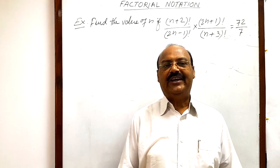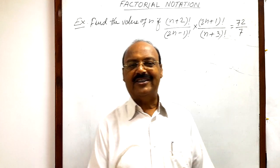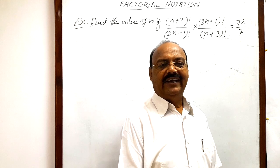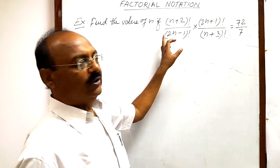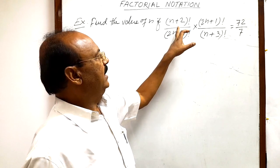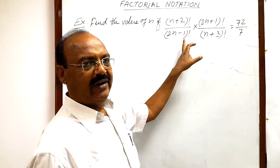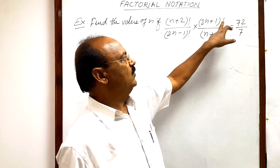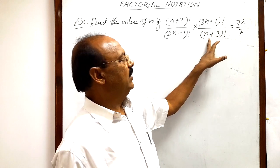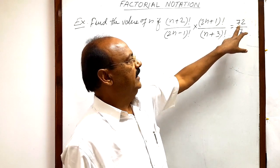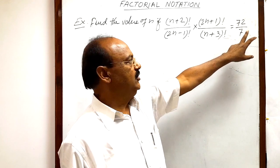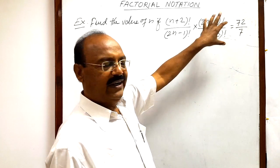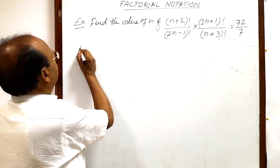Welcome students. Today we are going to discuss a very interesting question from the topic factorial notation. The question is: find the value of n if (n+2)! / (2n-1)! times (2n+1)! / (n+3)! is equal to 72/7. Let us see the solution.